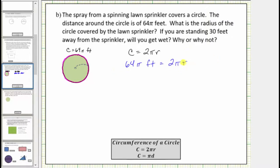To solve the equation for r, we would divide both sides by 2π. Simplifying on the right side, 2π divided by 2π is equal to one, one times r is equal to r. On the left side, π divided by π simplifies to one, and 64 divided by 2 is equal to 32. Therefore the radius is equal to 32 feet.